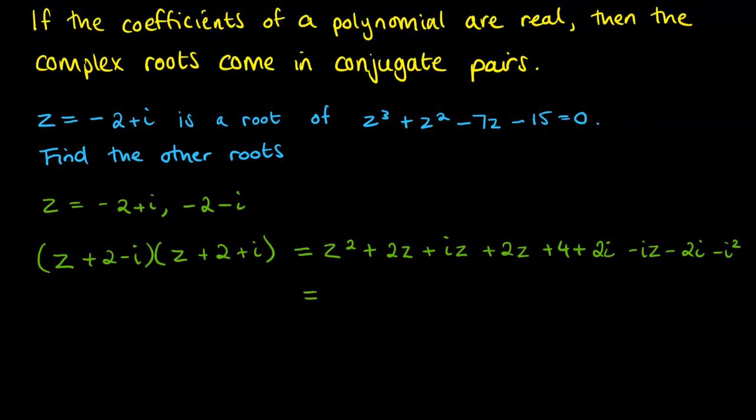And we're going to simplify this down now. So we get z squared plus 4z. The iz's cancel out. So do the two i's. So we're left with plus 4. And then minus i squared. Well, i squared is minus 1. So minus minus 1. We're going to add it on to the 4. And we end up with a plus 5.